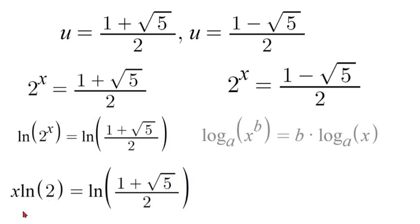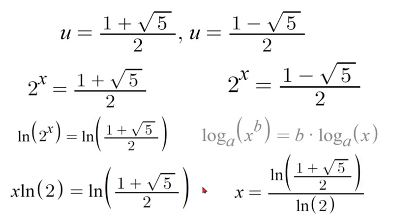Now lastly to get x by itself we're going to divide by natural log of 2. So the final answer is x is equal to natural log of 1 plus square root of 5 over 2 which is over natural log of 2. Thank you for watching. If you enjoyed this video please like and subscribe.